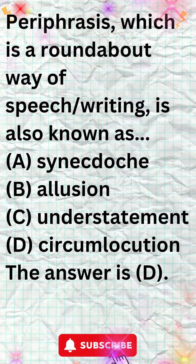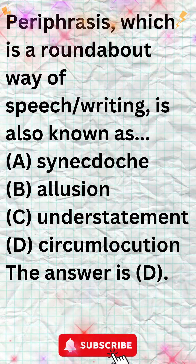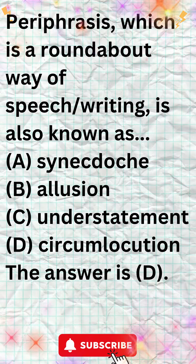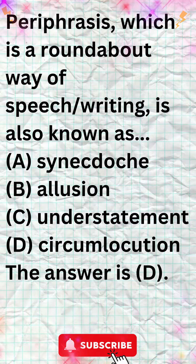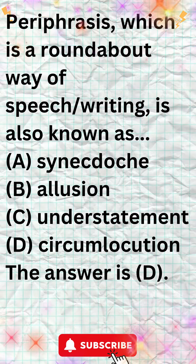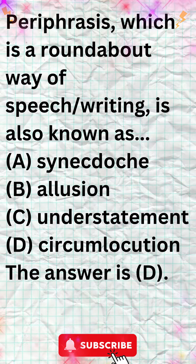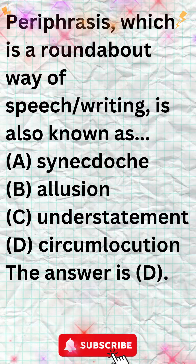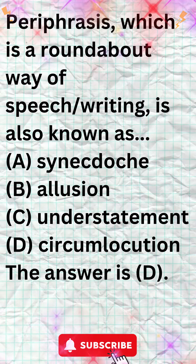Allusion is a reference to something that is well-known, such as a historical event, a work of literature, or a popular cultural phenomenon. Understatement is a figure of speech in which something is described in a way that makes it seem less important or impressive than it actually is. For example, 'a bit chilly' could be used to describe a very cold day.